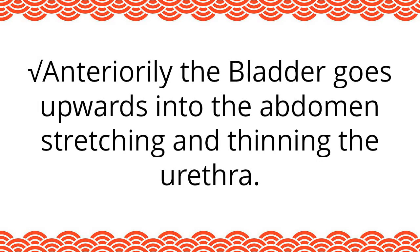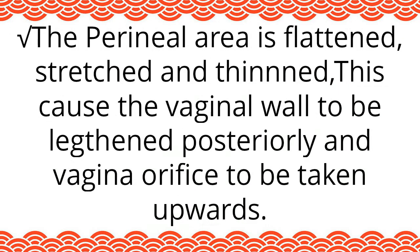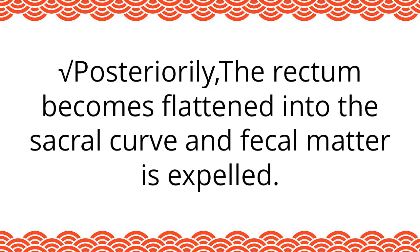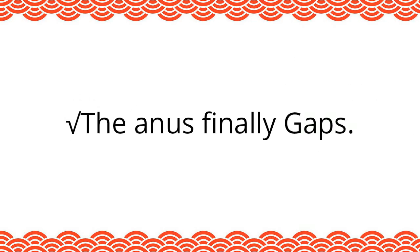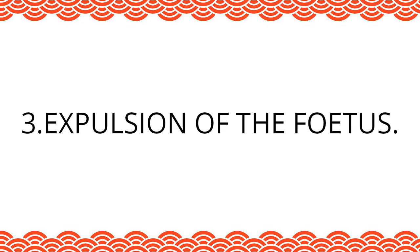Two: pelvic tissue soft displacement. Anteriorly, the bladder goes upwards into the abdomen, stretching and thinning the urethra. The advancing presenting part dilates the vagina and may tear it, causing some light bleeding. The perineal area is flattened, stretched, and thinned, causing the vaginal wall to be lengthened posteriorly and the vaginal orifice to be taken upwards. Posteriorly, the rectum becomes flattened into the sacral curve and fecal matter is expelled. The anus finally gapes.